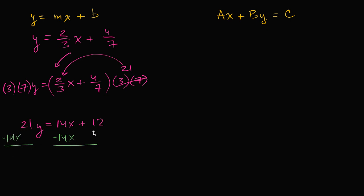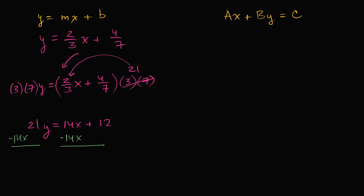And then what am I left with? I'll give myself a little bit more space. So on the left-hand side, I have negative 14x plus 21y equals, let's see. I subtracted 14x to get rid of this. And then I have just equals 12.